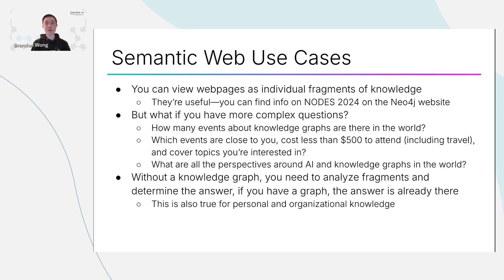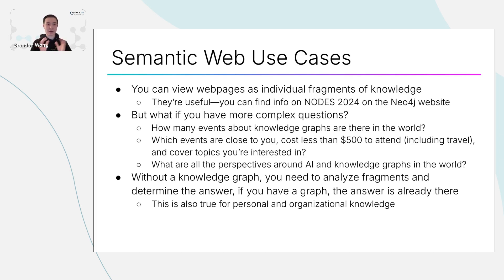But what if you have more complex questions? For example, how many events about knowledge graphs are there in the world? To answer that, you would normally have to analyze all the fragments out there and find every webpage with information about an event to determine if it's the same event or not. There could be many events about knowledge graphs, and that would be incredibly cost and time prohibitive. But if all that information was already in a knowledge graph, you could just run a query, count the number of events, and immediately have that answer.